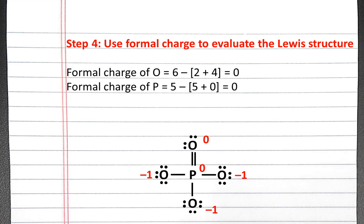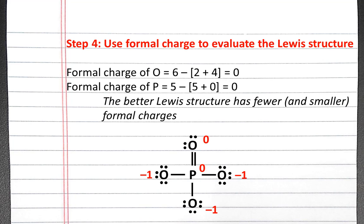So in this Lewis structure, we have fewer formal charges. The Lewis structure that has fewer and smaller formal charges should be the better structure.